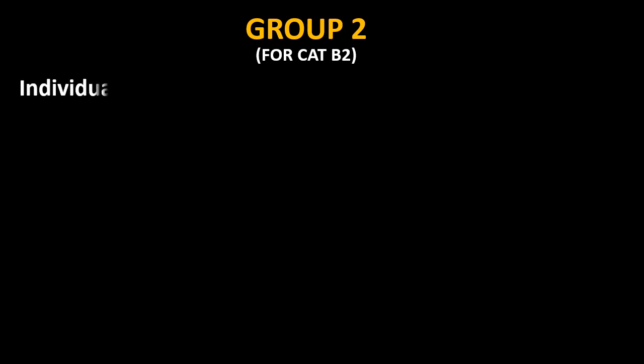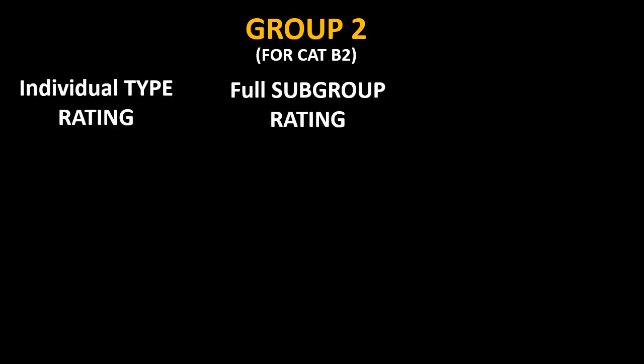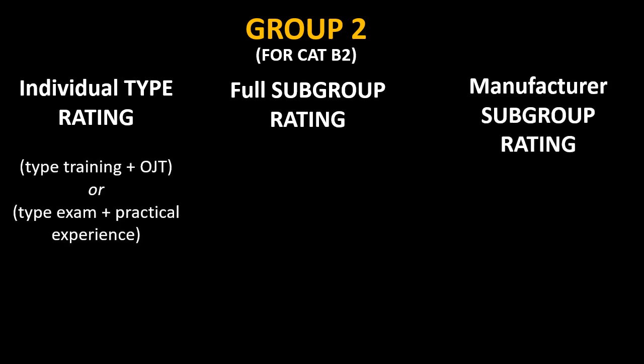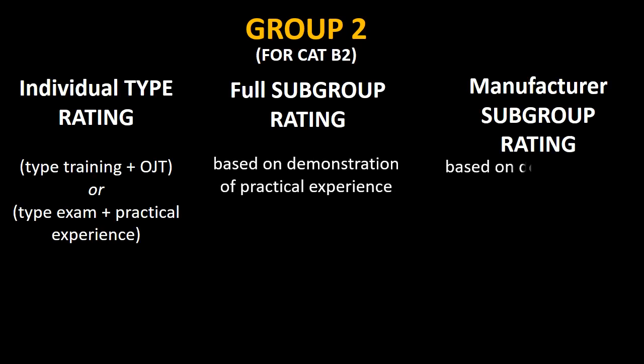Similarly, for category B2, if the aircraft falls in Group 2, you can have individual type rating, full subgroup rating, or manufacturer subgroup rating. For individual type rating you need type training plus OJT, or type exam plus practical experience. However, for full subgroup rating and manufacturer subgroup rating, it will be based on demonstration of practical experience.